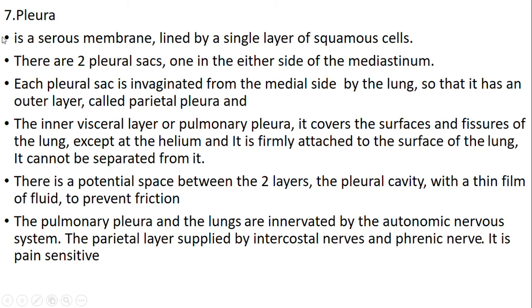Seventh question: pleura. Pleura is a serous membrane lined by a single layer of squamous epithelium. There are two pleural sacs, one on either side of the mediastinum. Each pleural sac is invaginated by the medial side of the lung. It has an outer layer called parietal pleura and an inner visceral or pulmonary pleura. It covers the surface and fissures of the lungs, except the hilum, and is firmly attached to the surface of the lung. The potential space between the two layers is the pleural cavity, containing a thin film of fluid to prevent friction. The pulmonary pleura and the lungs are innervated by the autonomic nervous system. The parietal layer is supplied by the intercostal nerves and phrenic nerve, and is pain sensitive.